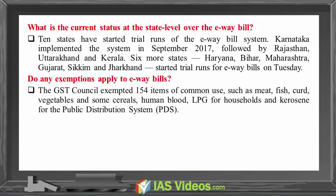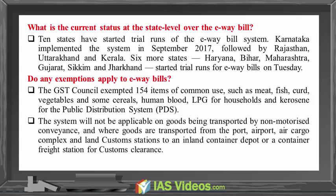Do any exemptions apply to E-Way Bills? The GST Council exempted 154 items of common use, such as meat, fish, curd, vegetables, some cereals, human blood, LPG for households, and kerosene for the public distribution system. The system will also not be applicable on goods transported by non-motorized conveyance, or where goods are transported from ports, airports, air cargo complexes, and land customs stations to an inland container depot or container freight station for customs clearance.